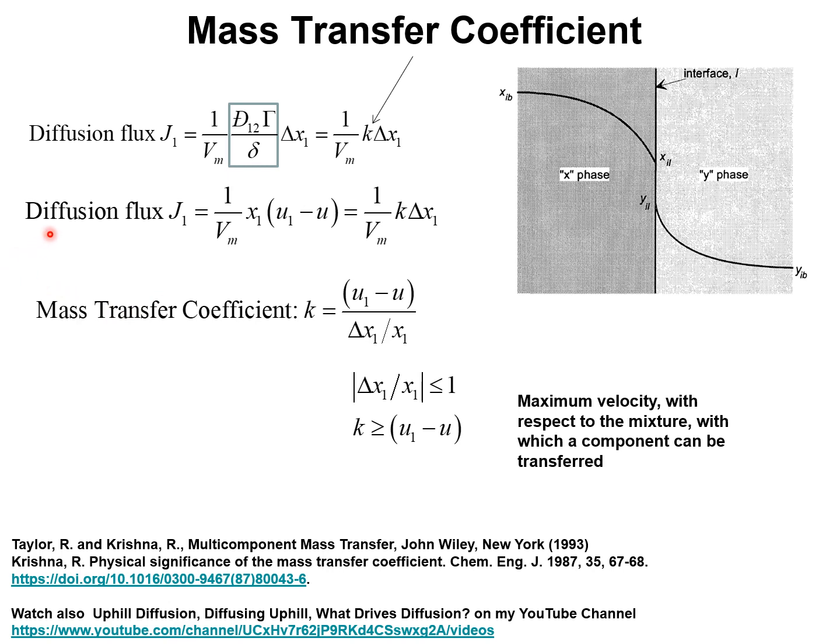From the previous slide, we note that the diffusion flux is written as a product of three factors. The first one divided by Vm, Vm is the molar volume. Mole fraction of component 1 times the velocity difference between the velocity of transport of species 1 and U, the molar average velocity of the mixture.